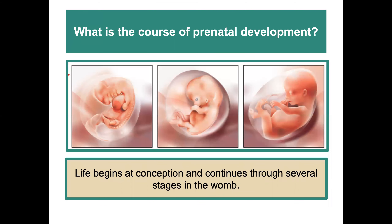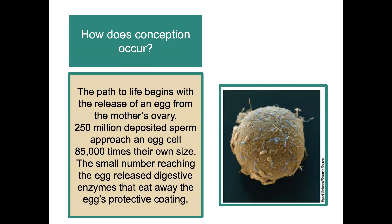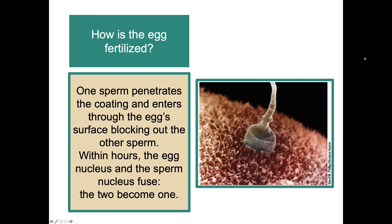What is the course of prenatal development? Life begins at conception and continues through several stages in the womb. The path to life begins with the release of an egg from the mother's ovary. 250 million deposited sperm approach an egg cell 85,000 times their own size. A small number reaching the egg release digestive enzymes that eat away the egg's protective coating. One sperm penetrates the coating and enters through the egg surface, blocking out the other sperm. Within hours, the egg nucleus and the sperm nucleus fuse — the two become one.